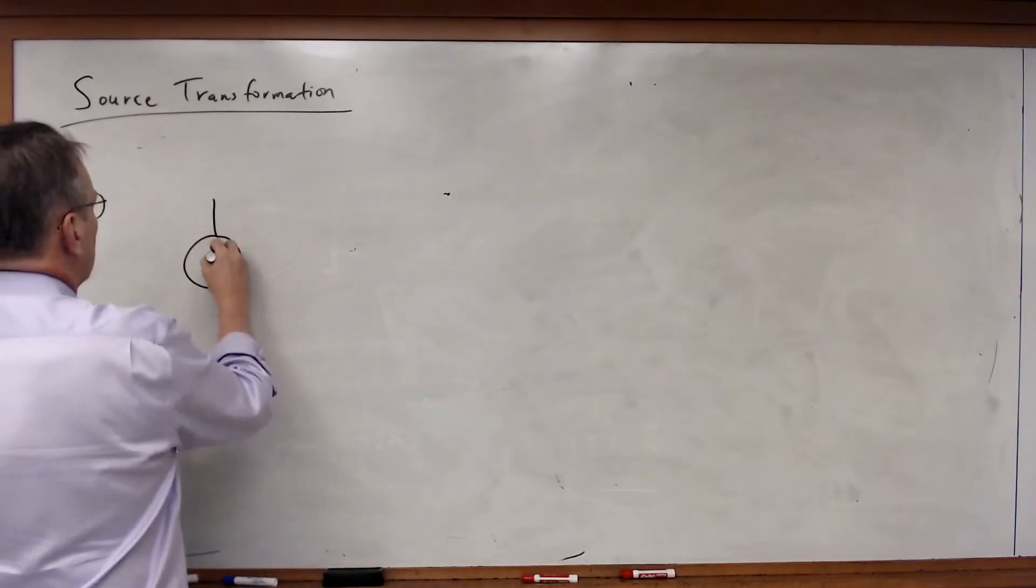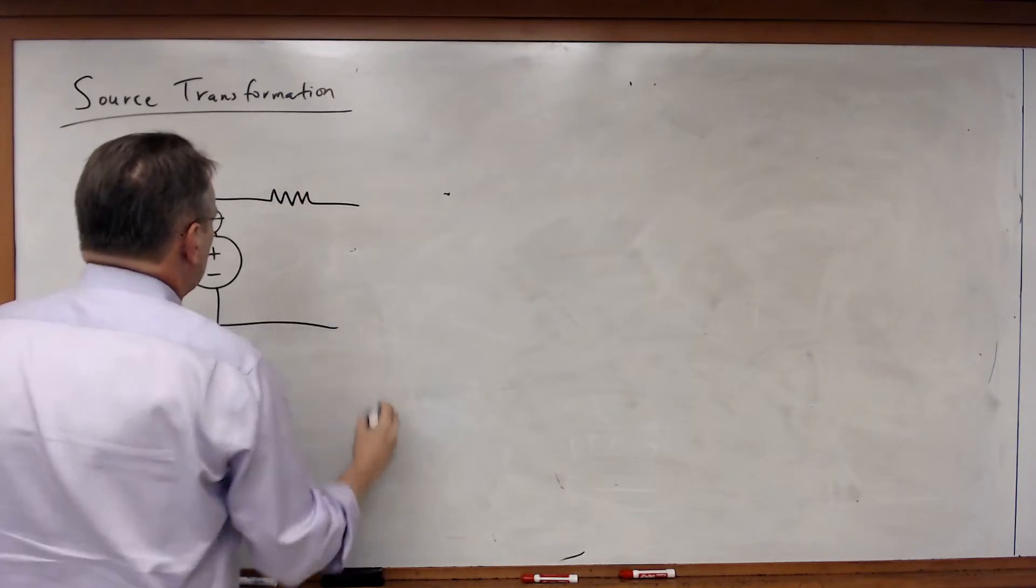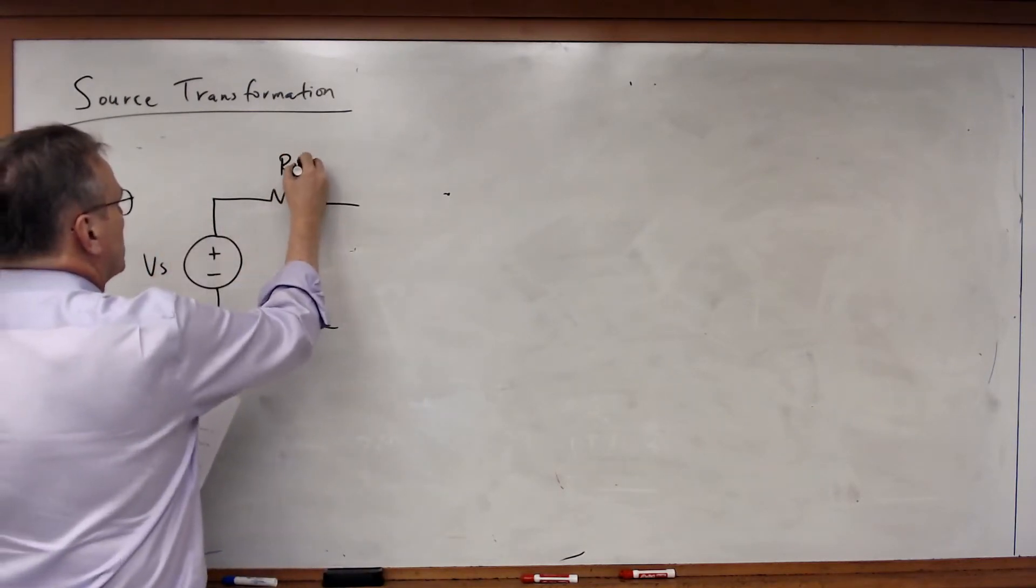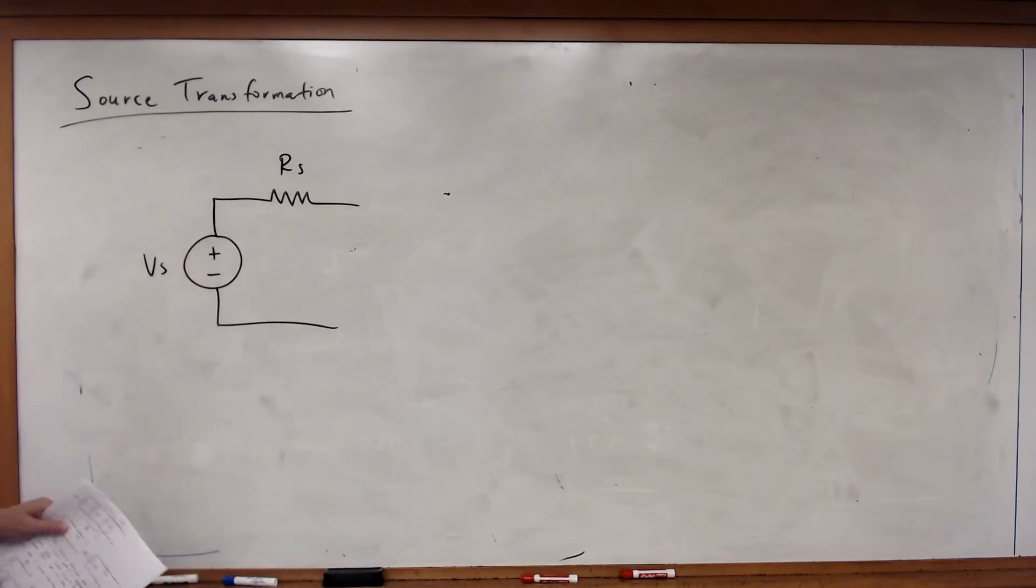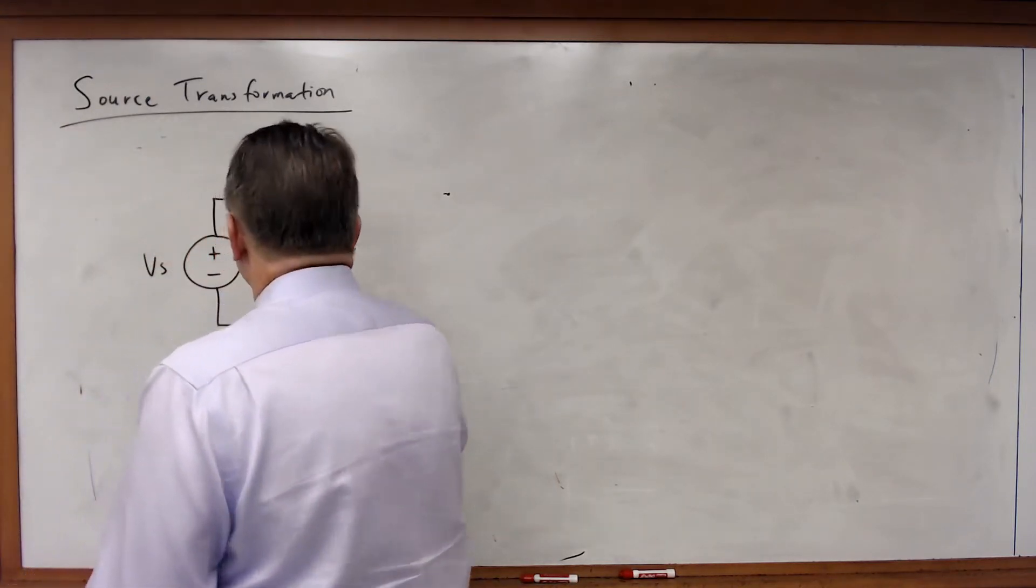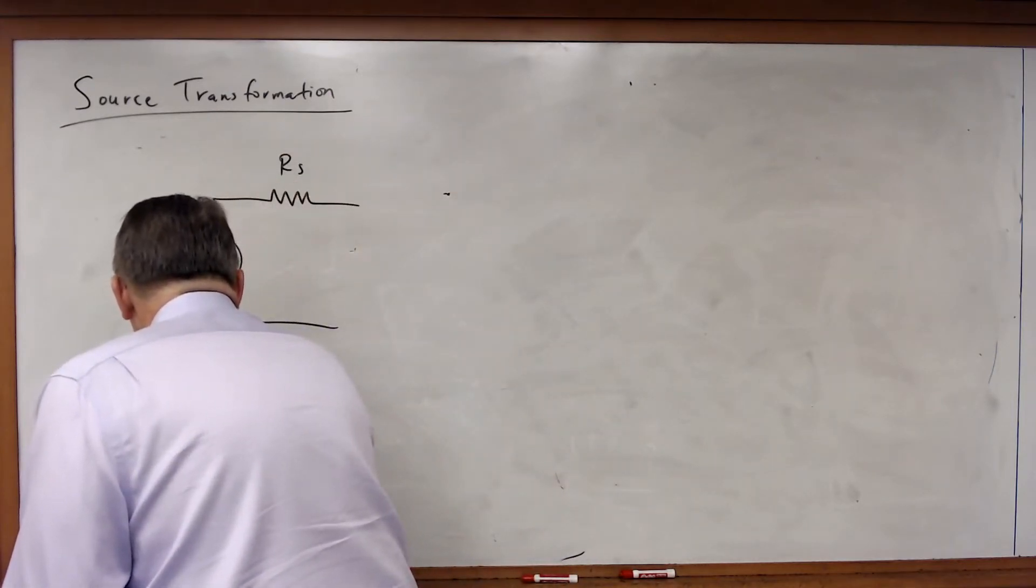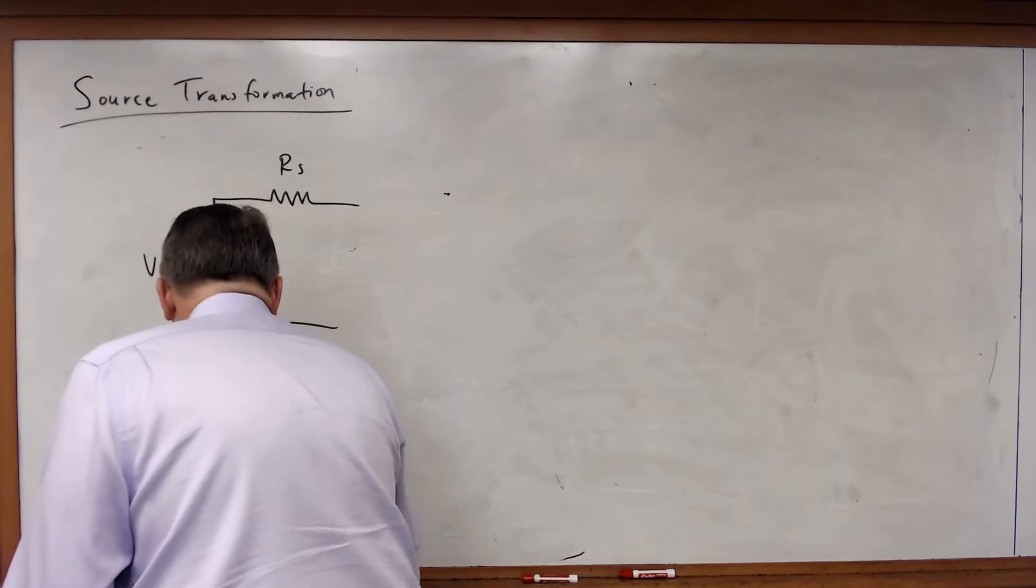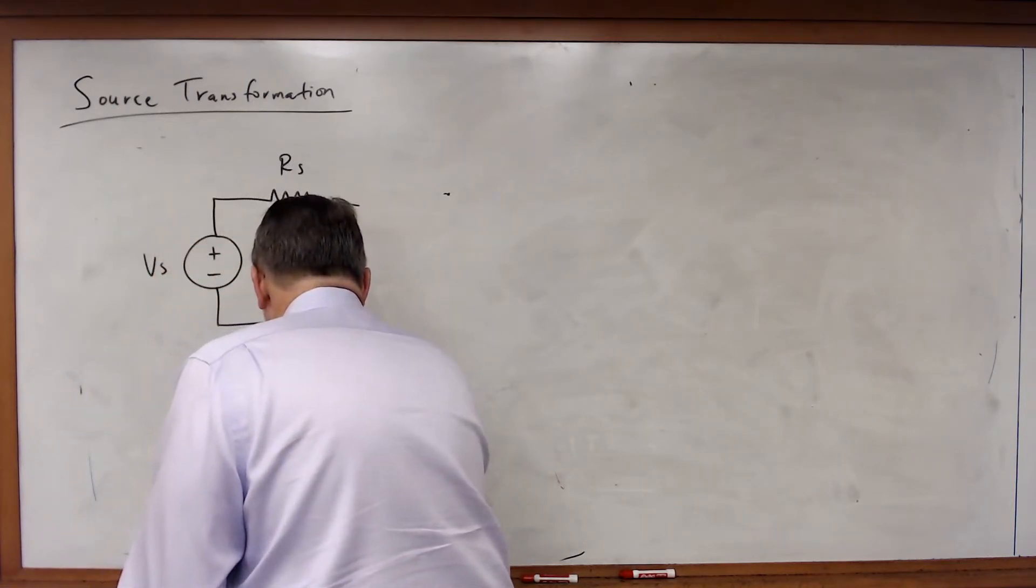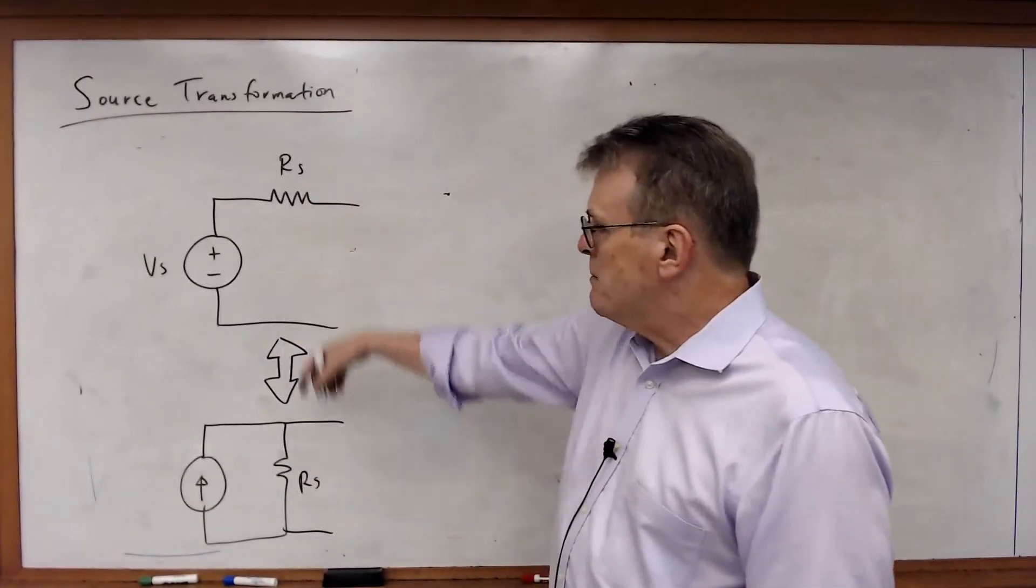Let's say we've got a voltage source in series with a resistor. Call that VS. This is RS. Well, source transformation tells me that I can transform this into a current source in series with RS. Pardon me, I should say, in parallel with RS. So source transformation lets me do this.